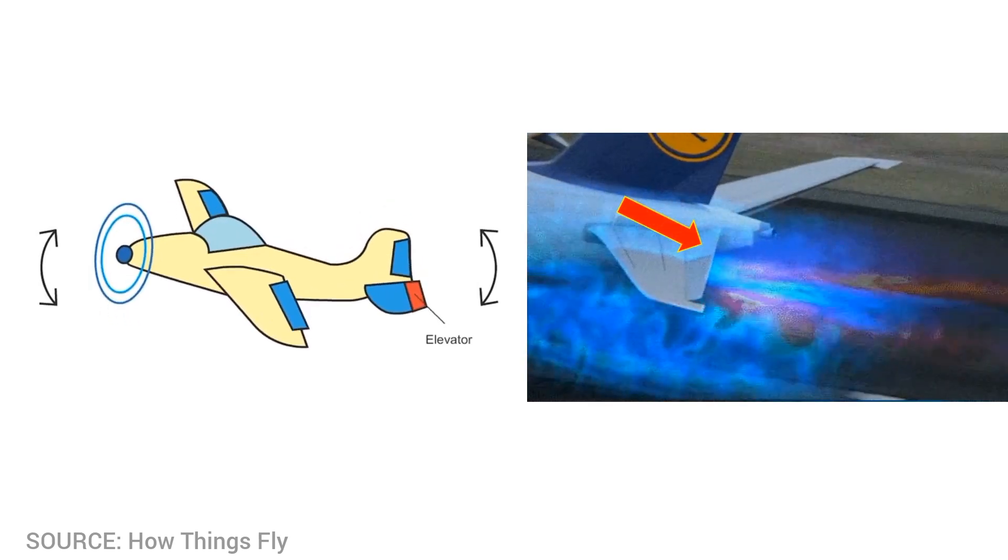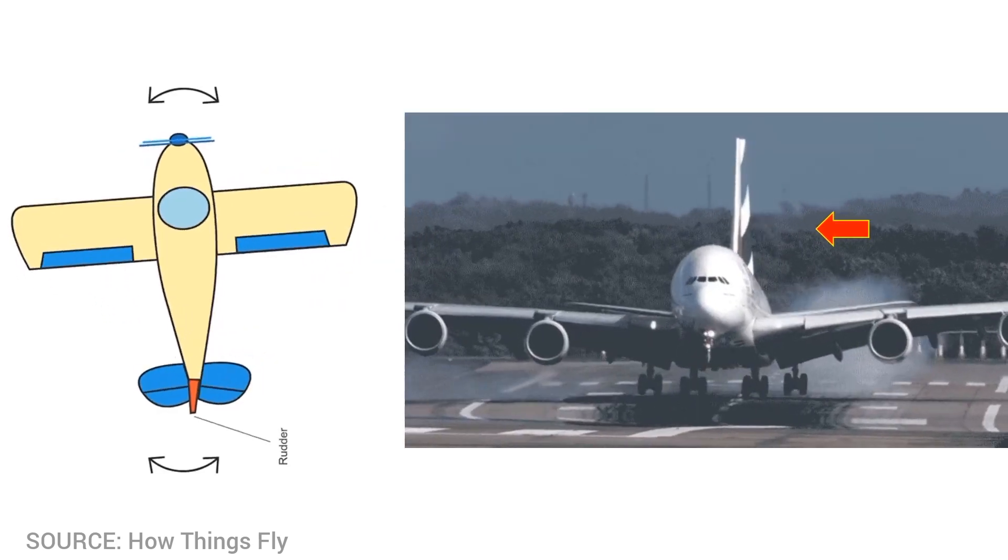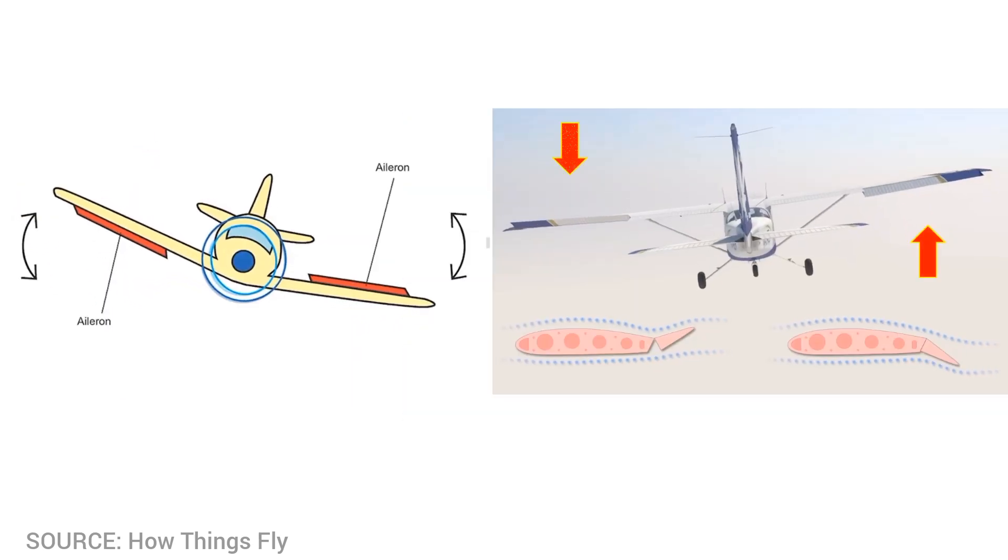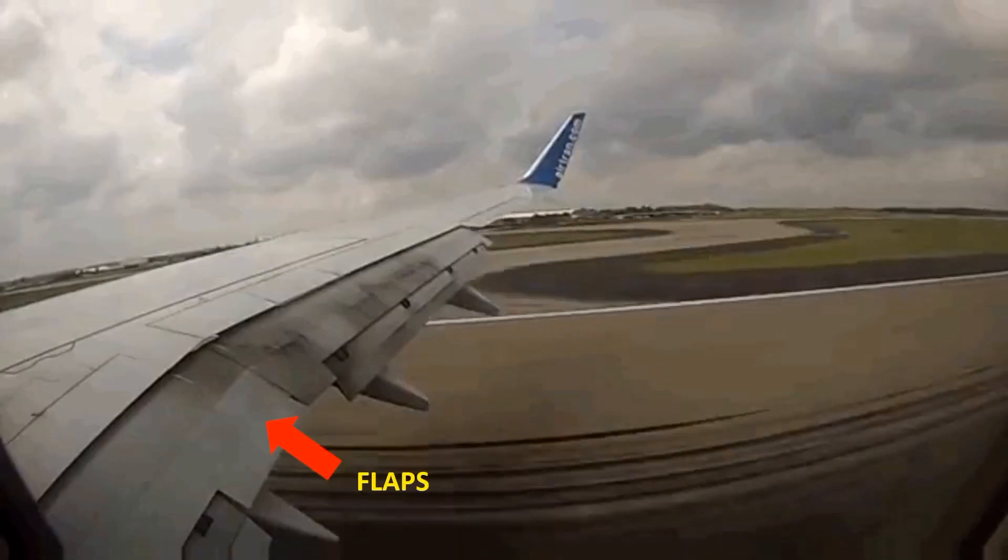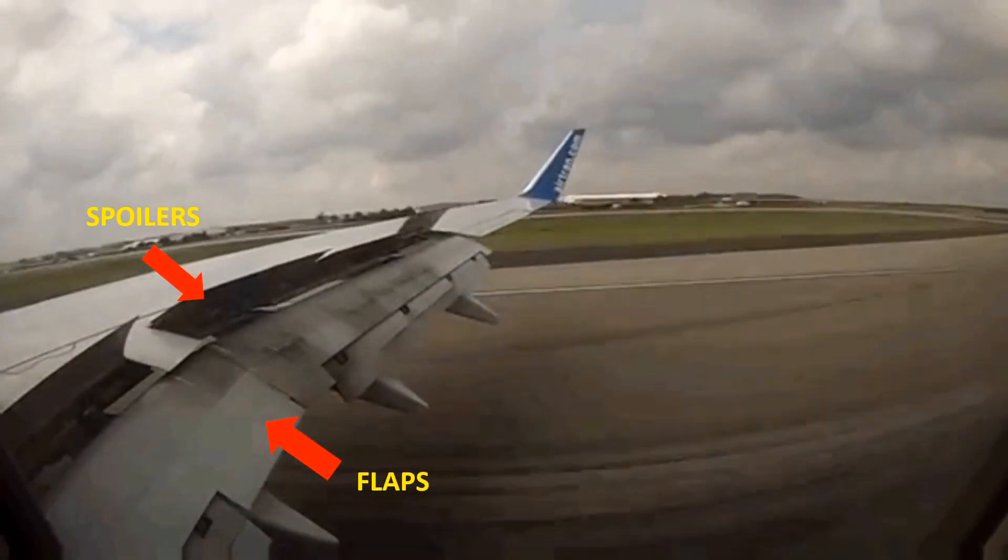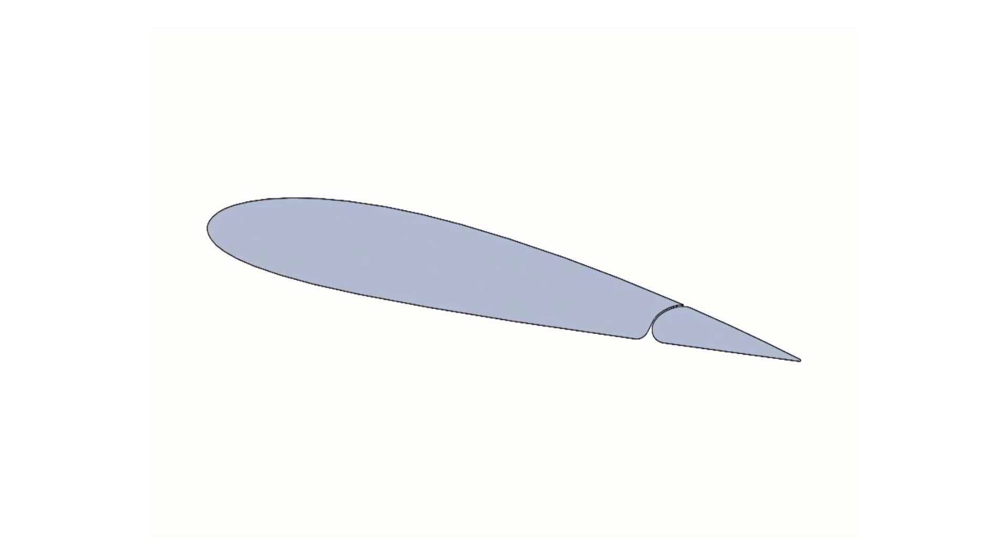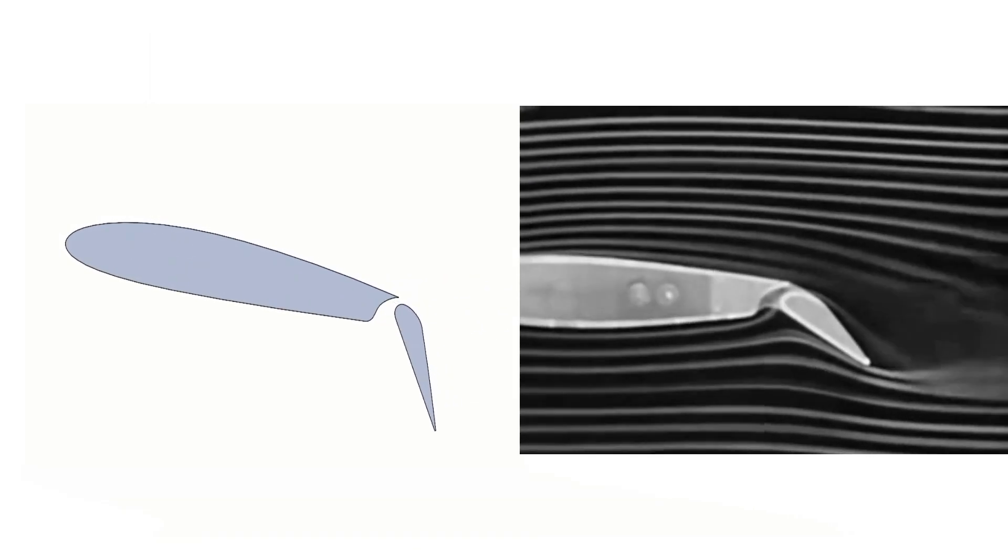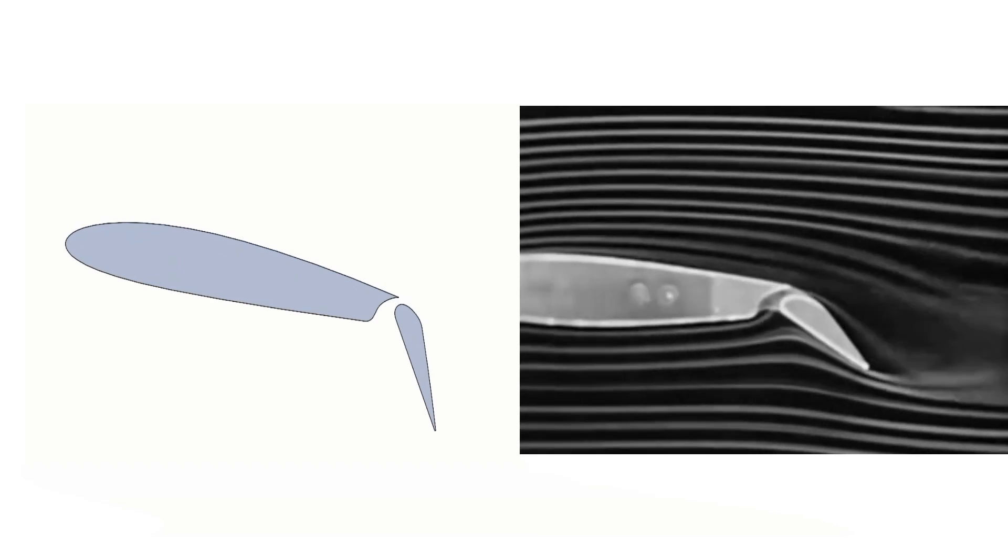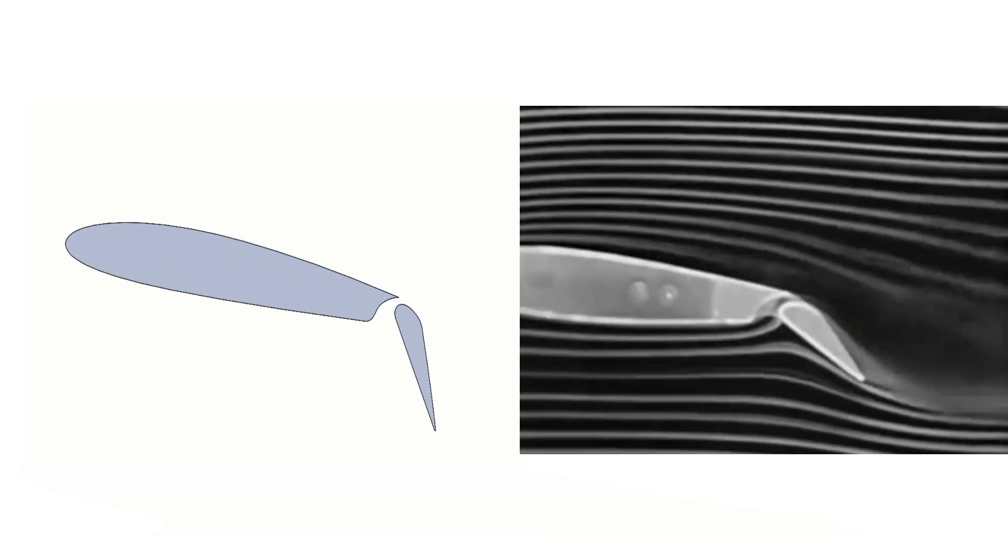The elevators control the pitch motion, the rudder controls the yaw and the ailerons control the roll. The flaps and spoilers are the secondary control surfaces. Flaps modify the lift that the wings generate. Depending on how much is the angle of inclination of the flap, they can slow down the airplane or generate a little more lift during takeoff.